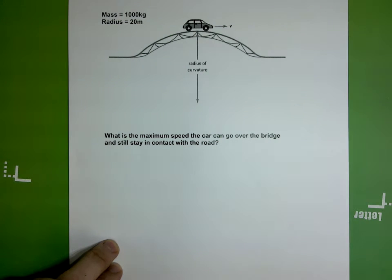This is a circular motion problem. You need to find out the maximum speed the car can go over the bridge and still stay in contact with the road. You're given that the mass of the car is 1000 kilograms and the radius of curvature of the bridge is 20 meters.